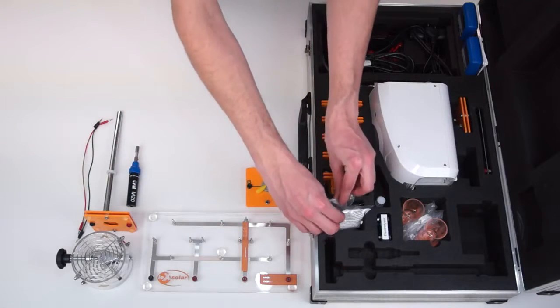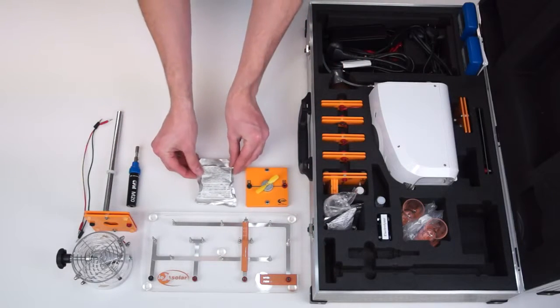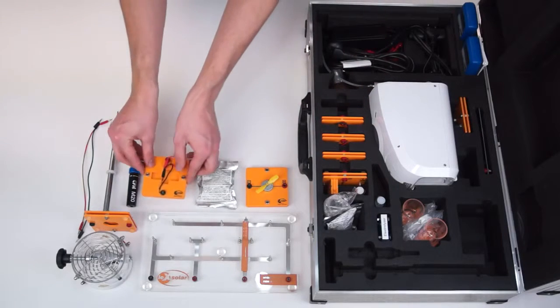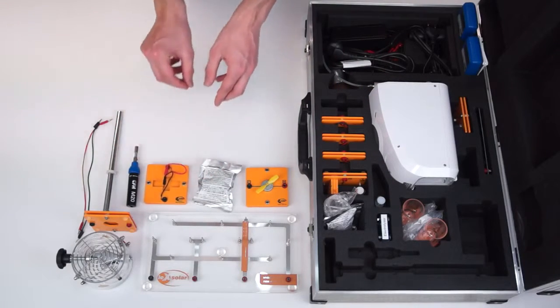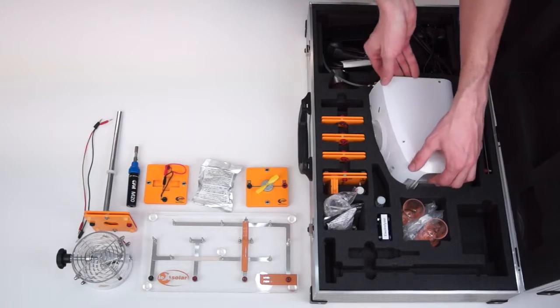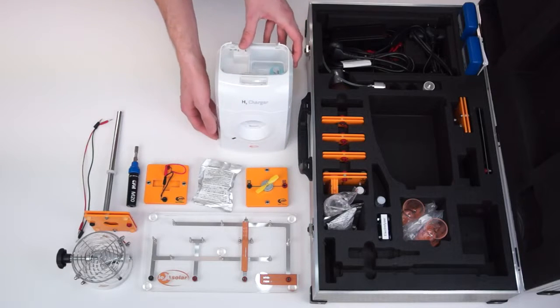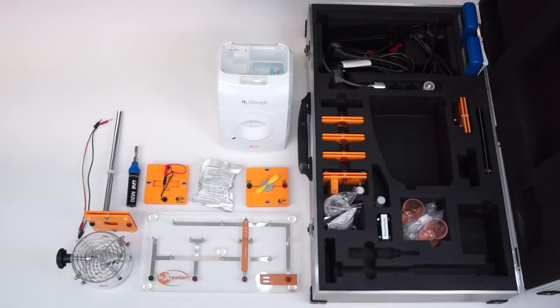We also need the PEM fuel cell and protective packaging, the associated module, the H2 charger with power supply, and an H2 storage with valve and hoses.